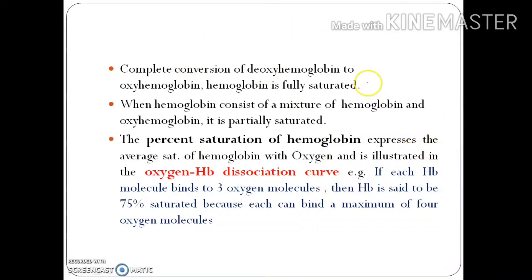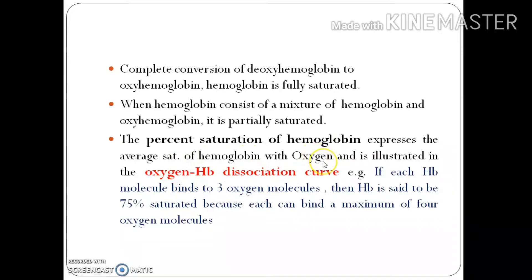Now we will look at a very important topic: the oxygen-hemoglobin dissociation curve. First, some prerequisites. Complete conversion of deoxyhemoglobin to oxyhemoglobin is referred to as full saturation of hemoglobin — when every deoxyhemoglobin has been converted to oxyhemoglobin. When there is a mixture of deoxyhemoglobin and oxyhemoglobin, hemoglobin is said to be partially saturated. The percent saturation expresses the average saturation of hemoglobin with oxygen and is illustrated in the oxygen-hemoglobin dissociation curve.